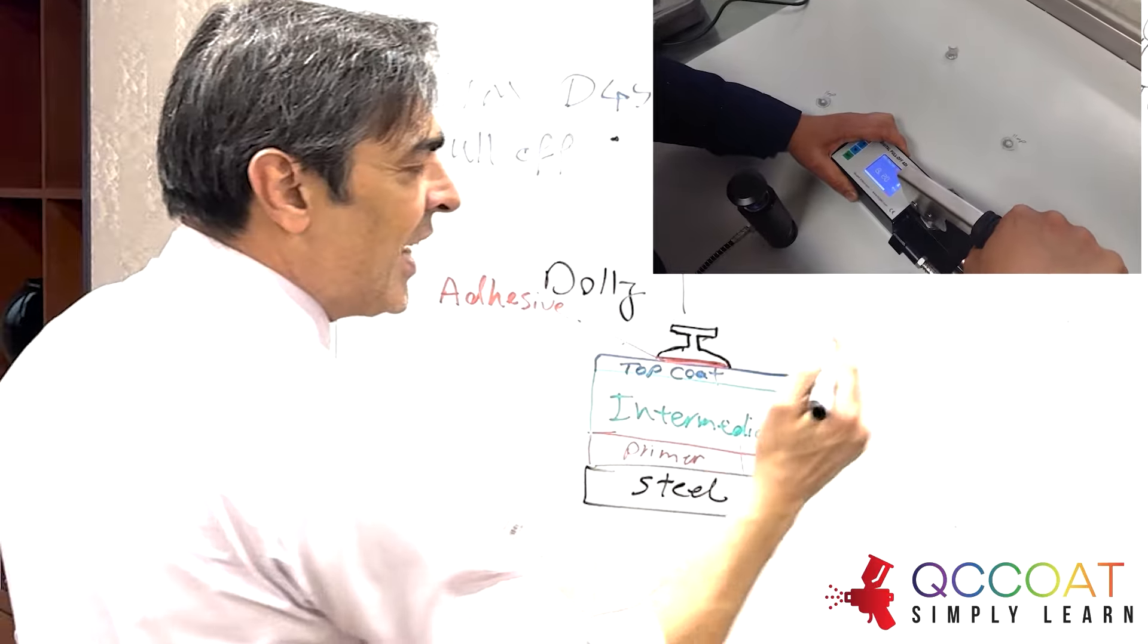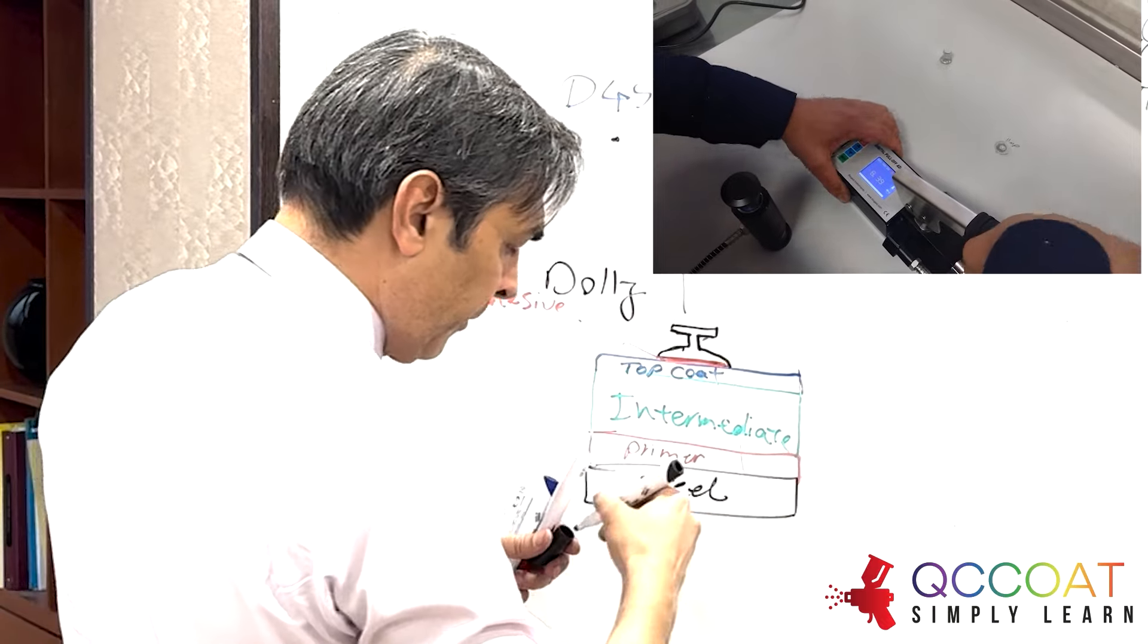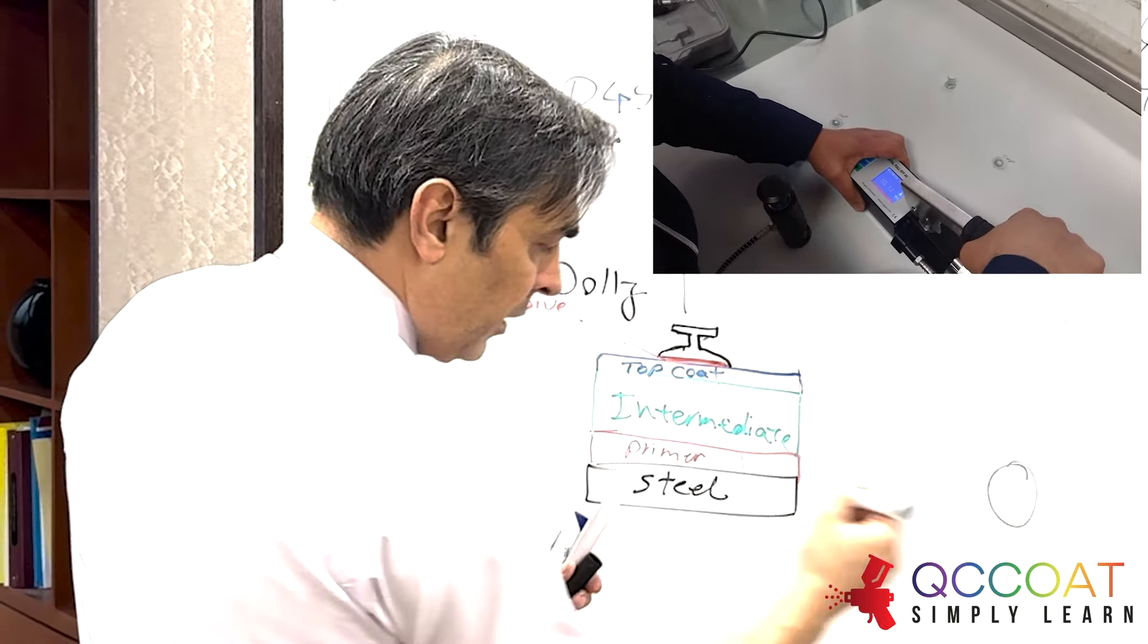What is pull-off test? A pull-off test for paint is a method used to assess the adhesion strength of a coating or paint to its substrate.